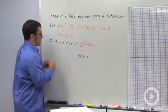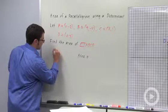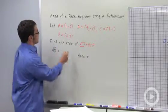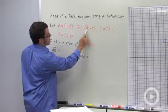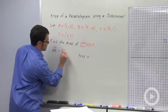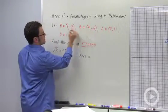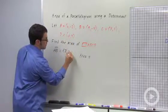Now vector AB goes from point A to point B, and so its components are going to be 9 minus 1, which is 8, and negative 4 minus negative 2, negative 4 plus 2, which is negative 2.